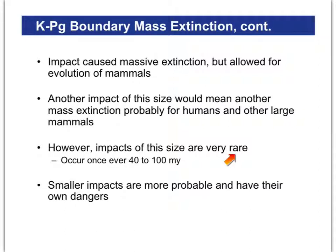The good news is that impacts of this size are very rare — once every 40 to 100 million years. The last major one was 65 million years ago, so we may be due for one, but we're kind of in the middle of that time range. More concerning in the near term is the risk of smaller impacts, like Chelyabinsk — the airburst over Russia — or Tunguska, which exploded over Siberia in 1908 and killed many people. If you happen to be underneath one of those, you run the risk of being killed, even if your whole species doesn't go extinct. So that's something to be aware of.